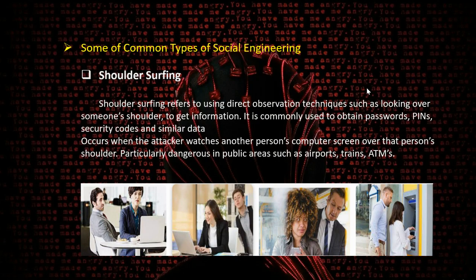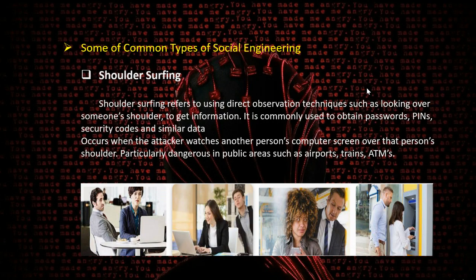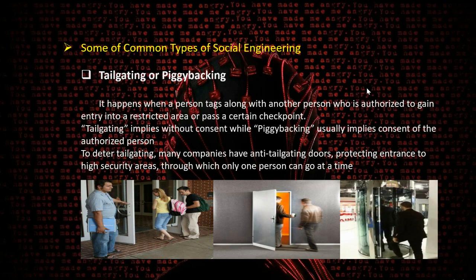Looking at common types of social engineering attacks — shoulder surfing refers to using direct observation techniques, such as looking over someone's shoulder, to obtain information. It is commonly used to get PINs, security codes, or similar data, and occurs when an attacker watches another person's computer screen. It is particularly dangerous in public areas such as airports, trains, or ATMs. Always be careful that no one is watching when performing sensitive tasks.